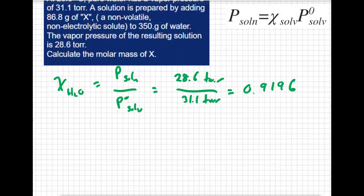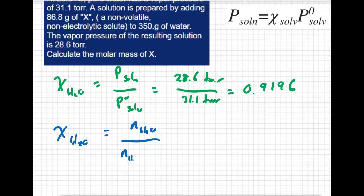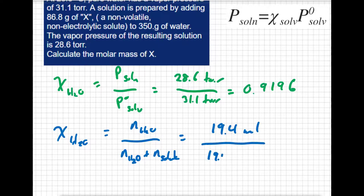And as before, my mole fraction of the water is going to equal my moles of water divided by my moles of water plus my moles of the solute. We know that's 0.9196. And we're given 350 grams of water, which comes out to 19.4 moles of water. So I'm going to divide that by 19.4 plus x.